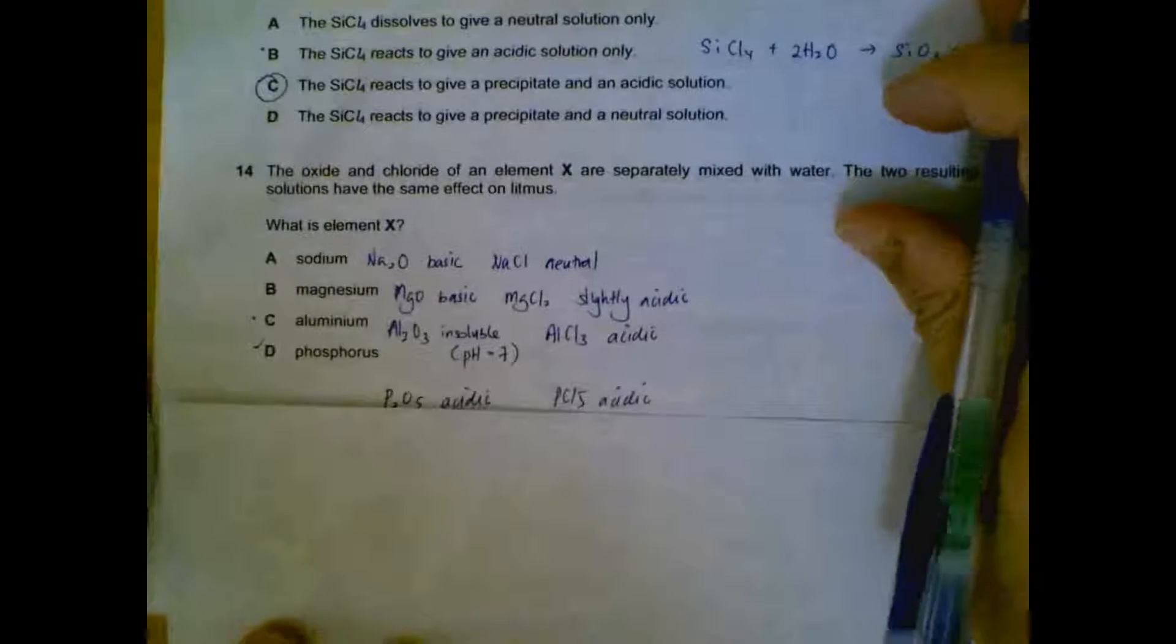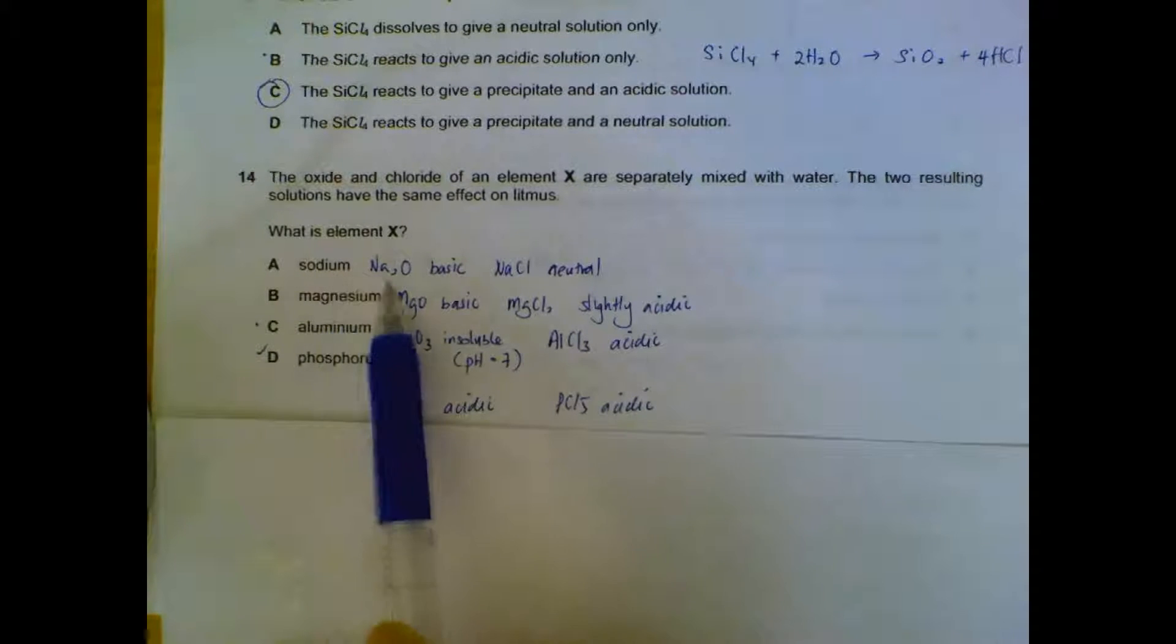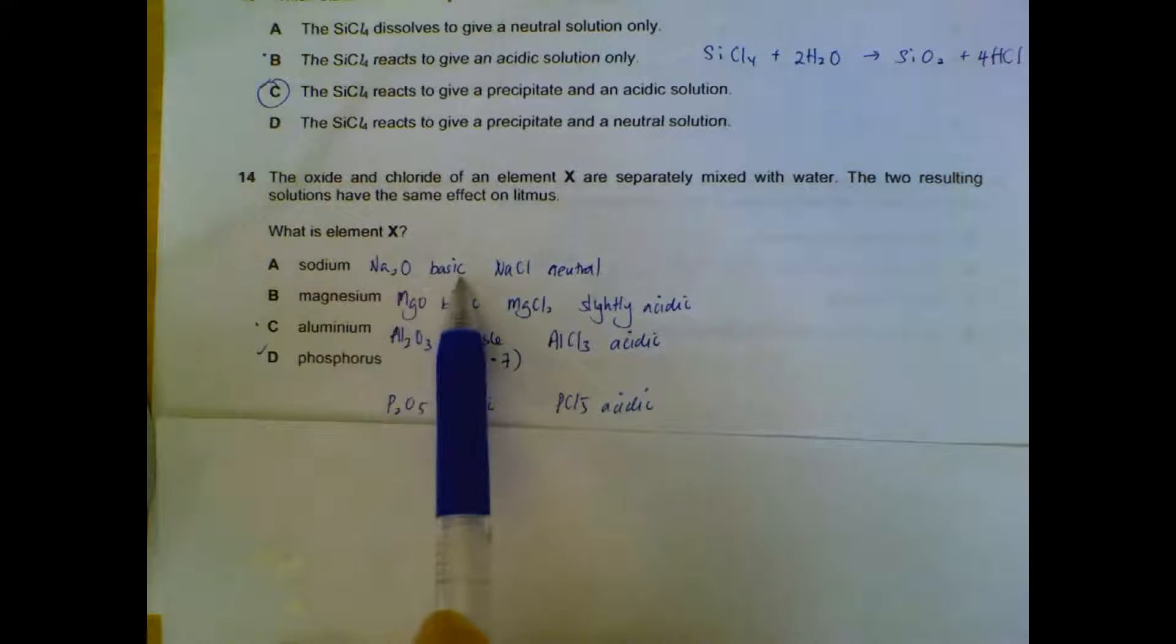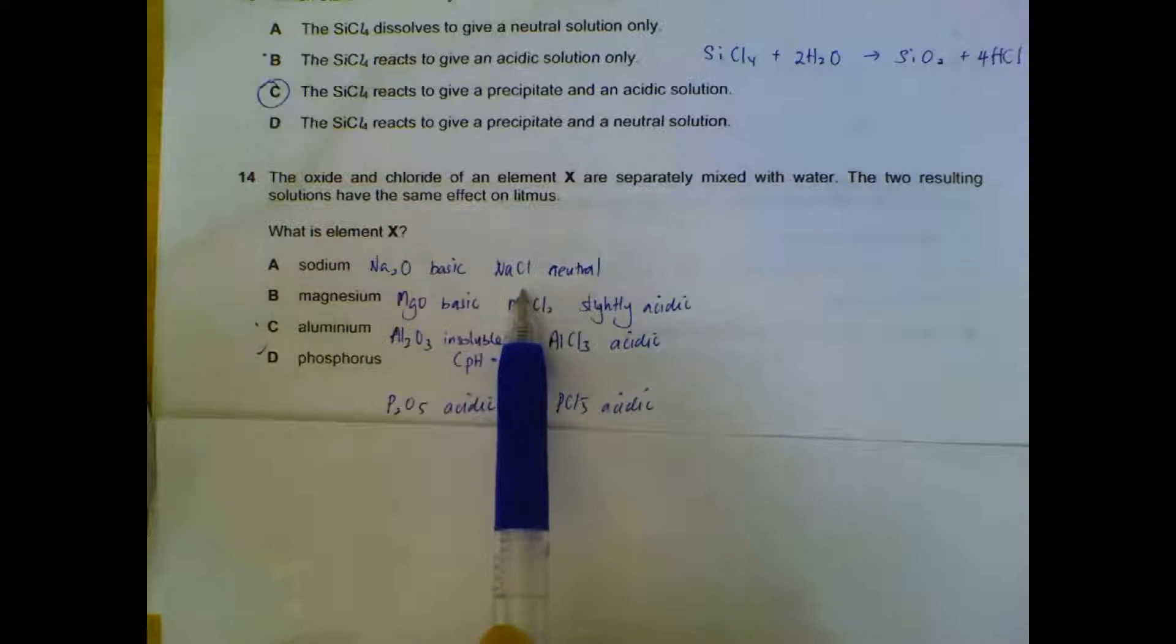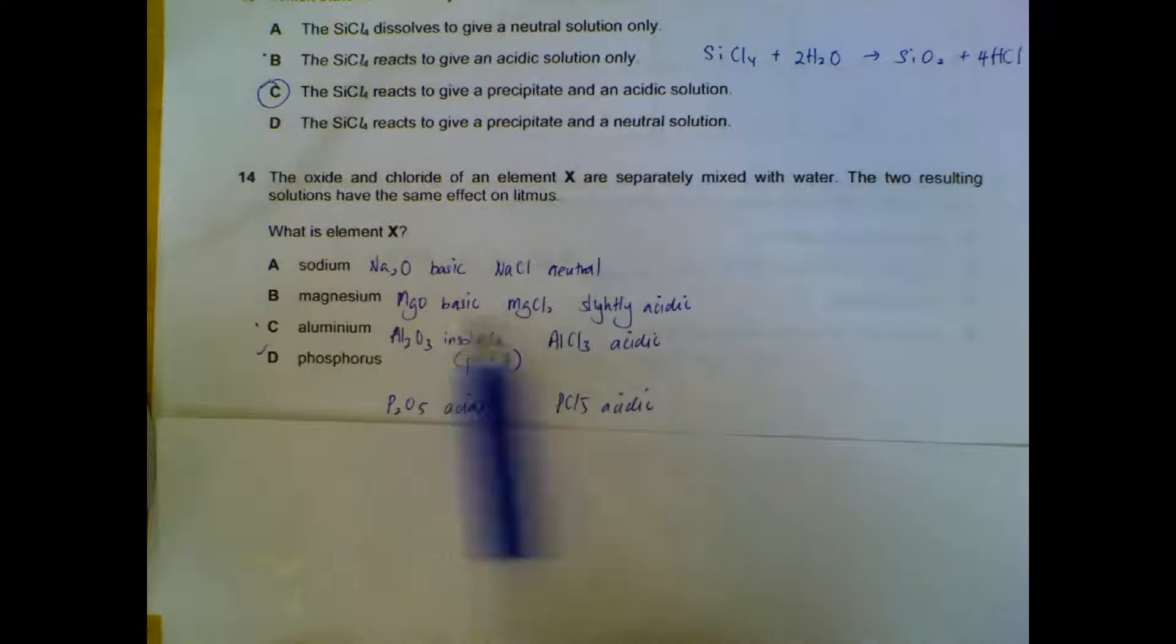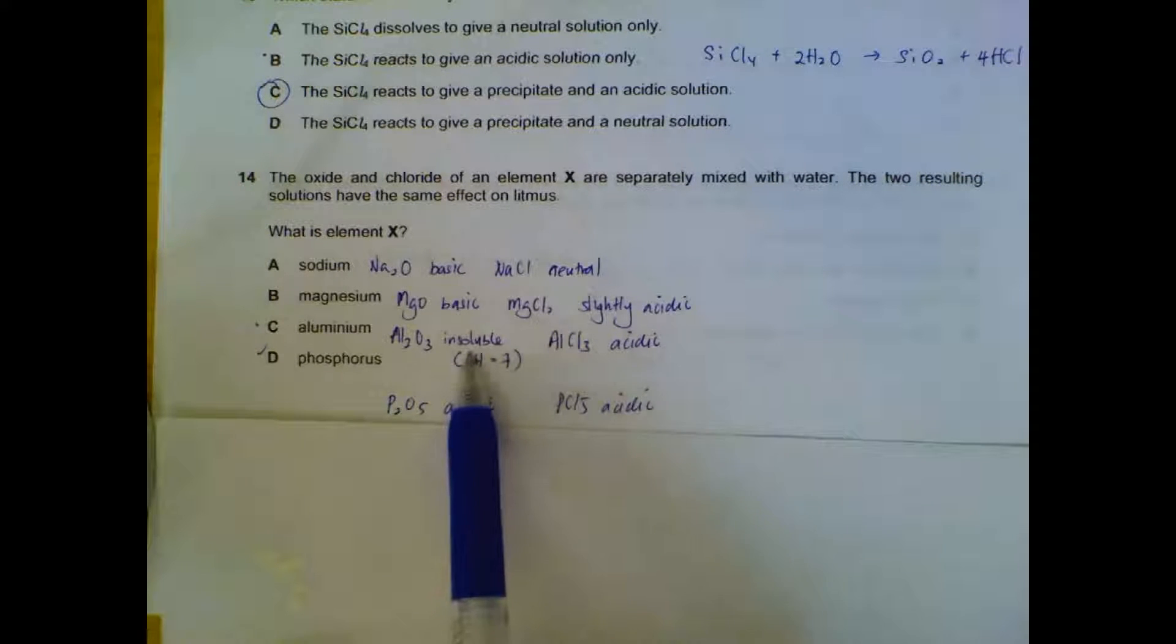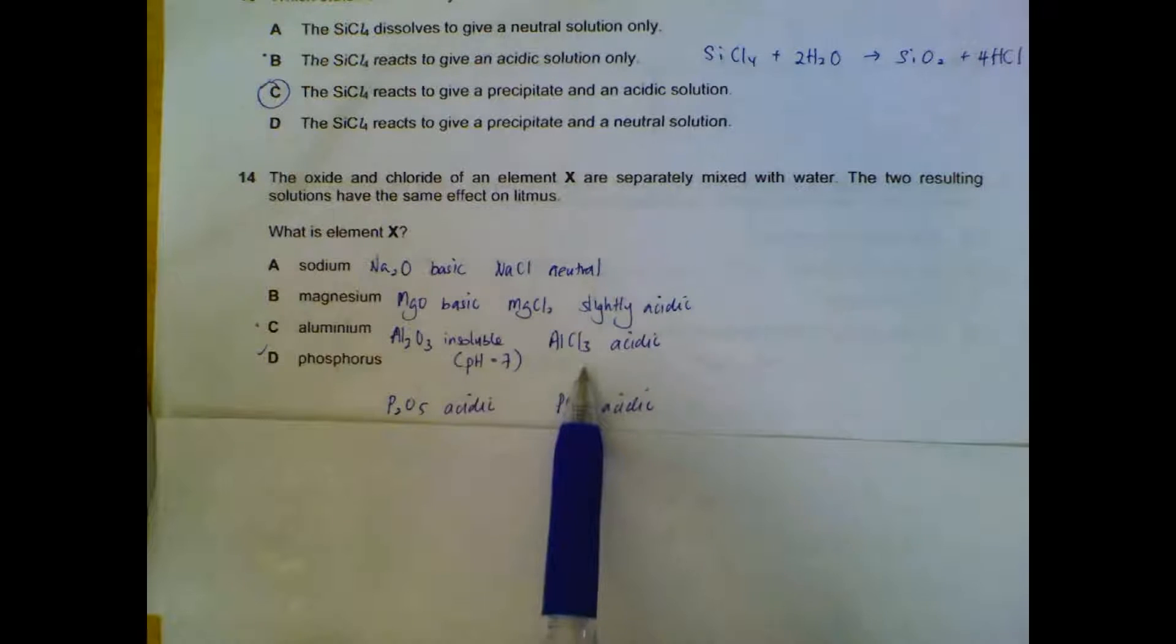Question 14. Oxides and chlorides of element X mixed with water - which one has the same effect on litmus? We go down the options. Sodium oxide is soluble in water, causes a basic solution. Sodium chloride is neutral, so not the same effect. Magnesium oxide is slightly soluble, basic. Magnesium chloride is slightly acidic.